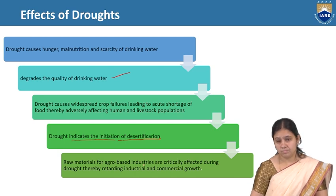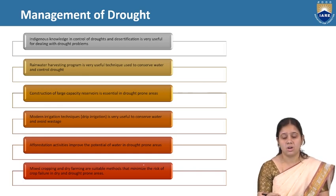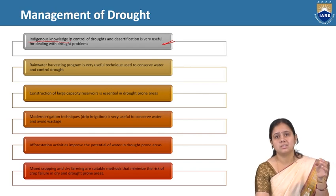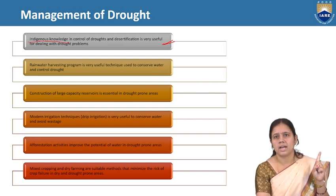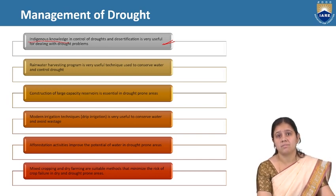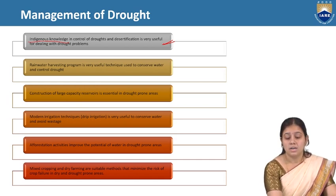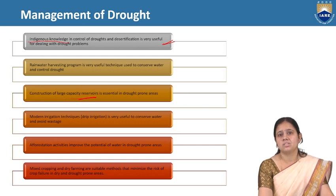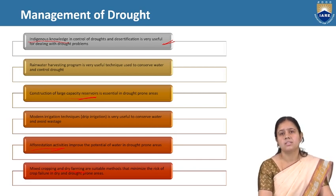Management of drought: indigenous knowledge in control of drought and desertification is very useful. Rainwater harvesting is an important measure. Construction of large-capacity reservoirs in drought-prone areas is recommended. Modern irrigation techniques like drip irrigation are very useful for drought-prone areas. Afforestation activity and mixed cropping and dry farming are suitable methods to minimize the risk of drought in drought-prone areas.